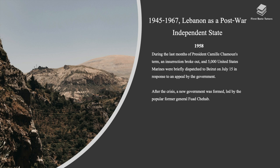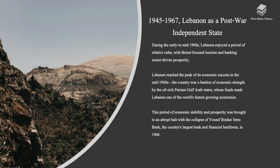In 1958, during the last months of President Camille Chamoun's term, an insurrection broke out and 5,000 United States Marines were briefly dispatched to Beirut on July 15th, in response to an appeal by the government. After the crisis, a new government was formed led by the popular former general Fouad Chehab. During the early to mid-1960s, Lebanon enjoyed a period of relative calm, with Beirut's tourism and banking sector driving prosperity.